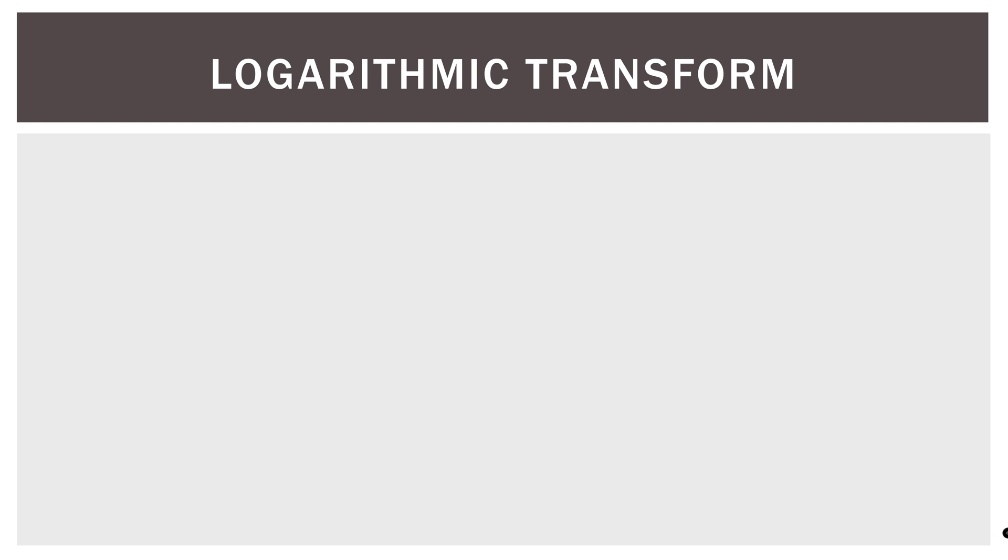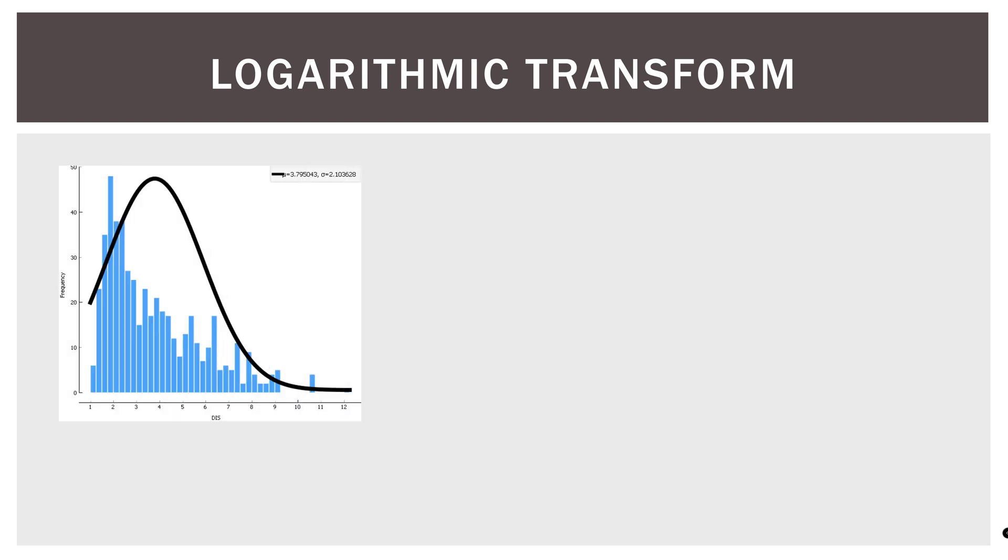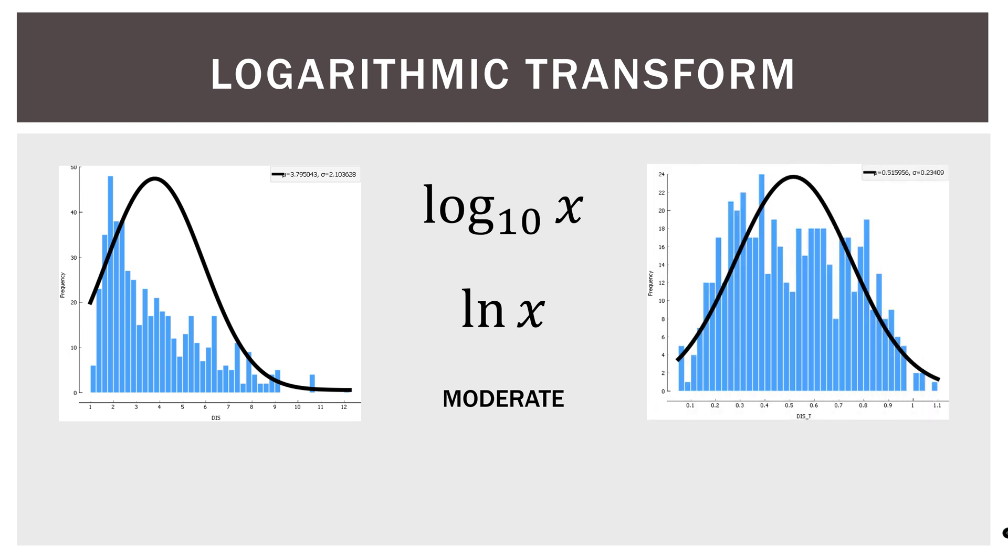Next, we have the logarithmic transform. So here is the distance variable. I do believe that this measures the distance of the home from a city center, I believe. So we can see here that this is more pronounced. The right skew is moderate. If we took the log base 10 of those values, or the natural log, which is the log base e, we would see what we could get. So I took the log base 10, and this is the result, almost perfectly normally distributed, if we apply the curve to these values. So we can see that this transform had the exact effect that we wanted.